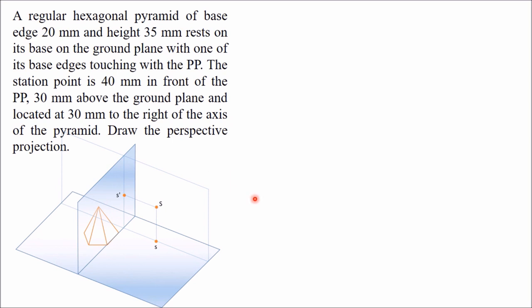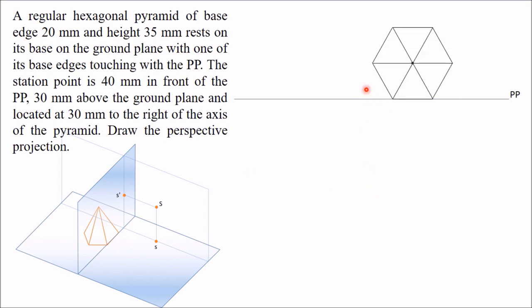First we will draw the top view of the picture plane, which will be a line. I have drawn this PP. Now we will draw the top view of this pyramid, which will be a hexagon with one side on PP. Keeping one side on PP, I have drawn the hexagon and joined all lines from the center, because these are the slant edges of the pyramid. Mark all corner points: A, B, C, D, E, F, and O is the apex.